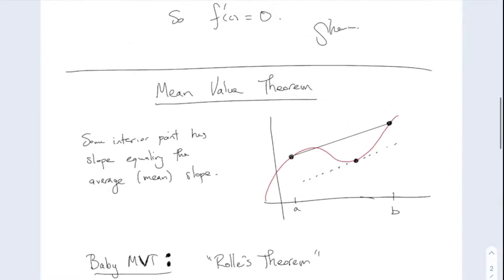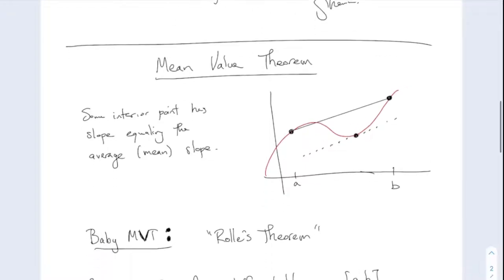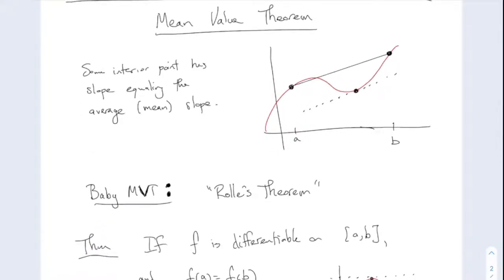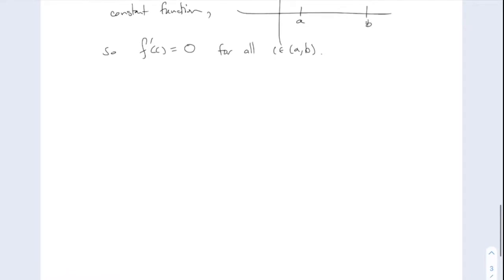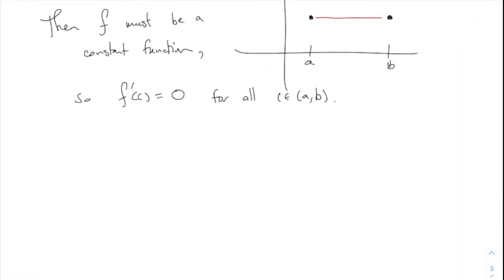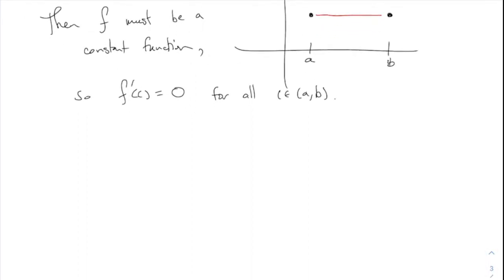The proof of the actual mean value theorem is the same idea — you just have to straighten out the picture with a linear transformation. I don't want to get into those details; you could look it up in the book. Now I have two cute, obvious-seeming corollaries from calculus that you probably never talked about in calculus class, but which I think are very interesting.